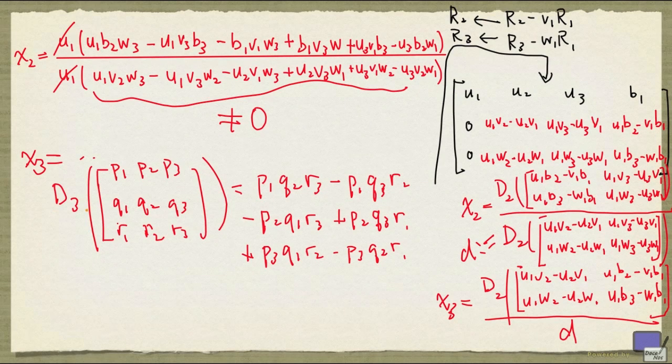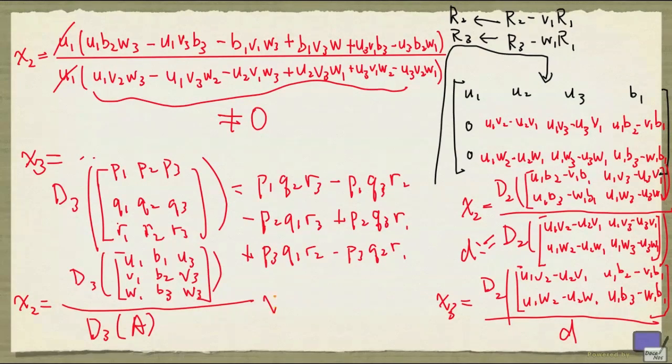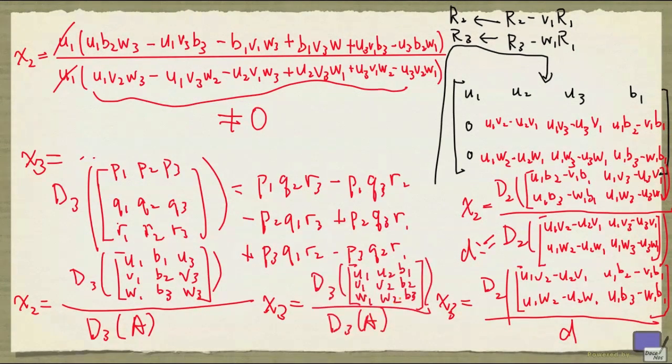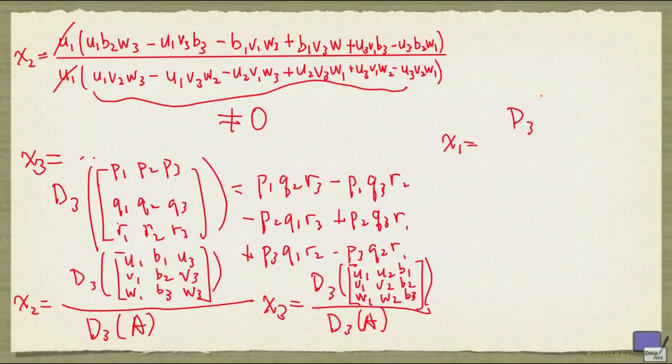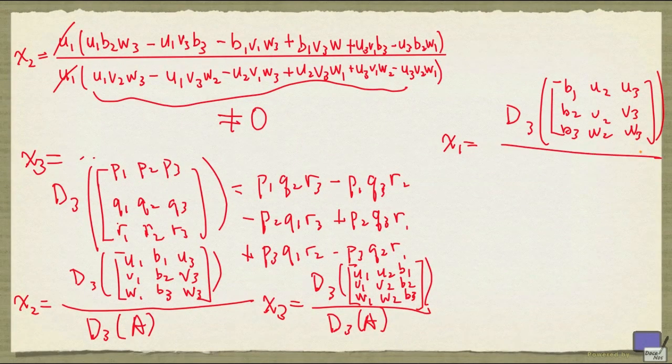And using this, you can write x2 as this, and x3 can be written as this. And of course, once you have x2 and x3, you can work out what x1 is. And x1 will be d3 of b1 b2 b3, u2 v2 w2, u3 v3 w3, divided by d3 of A.